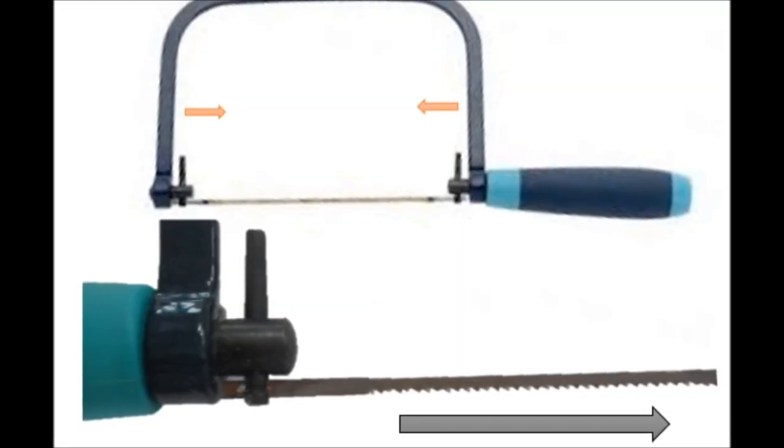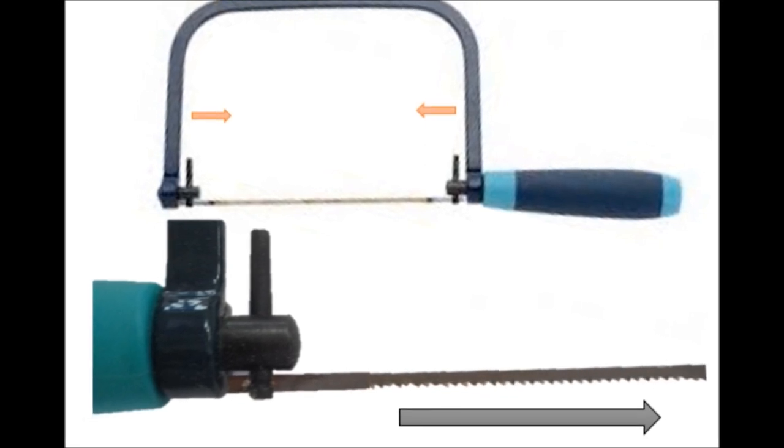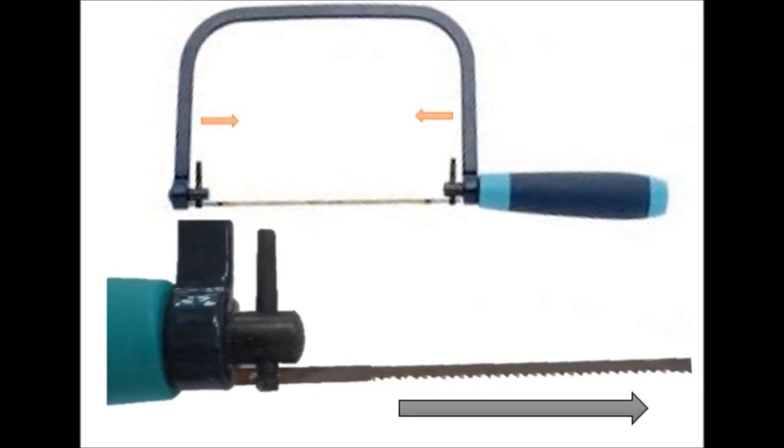If the blade was facing the opposite direction, the frame would start to contract and push against each other, losing its tension in the blade.